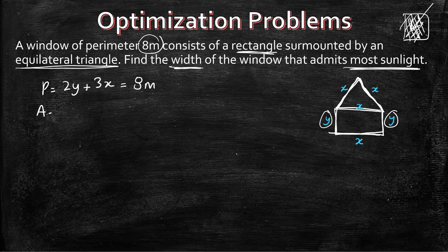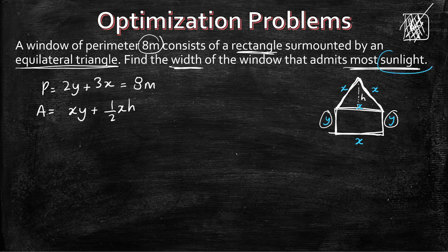We also have an area. The area is going to be x times y — the area of your rectangle — plus the area of your triangle. The area of the triangle is base times height divided by 2, so it's going to be one-half times x times h, where h is just the height of our triangle. Since we want to admit the most sunlight, we are going to have to work with our area function, and that's what we need to optimize.